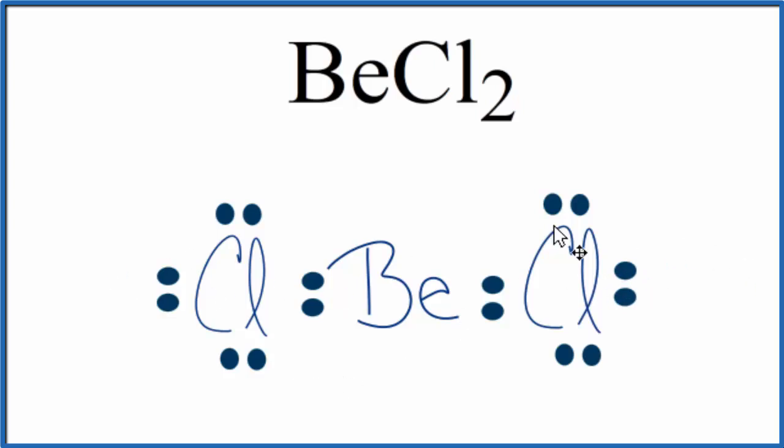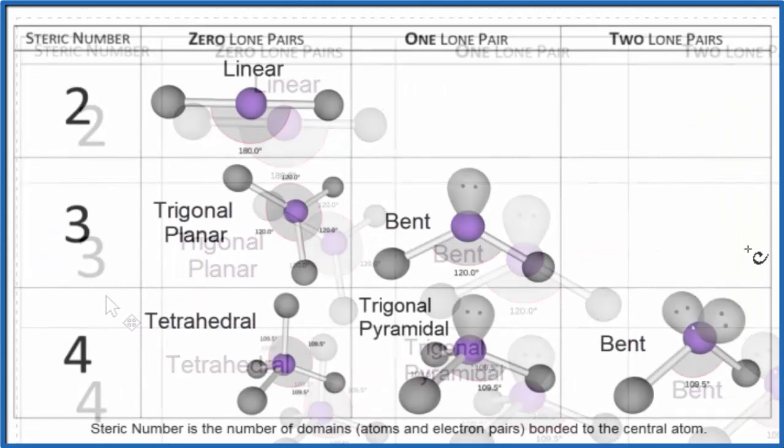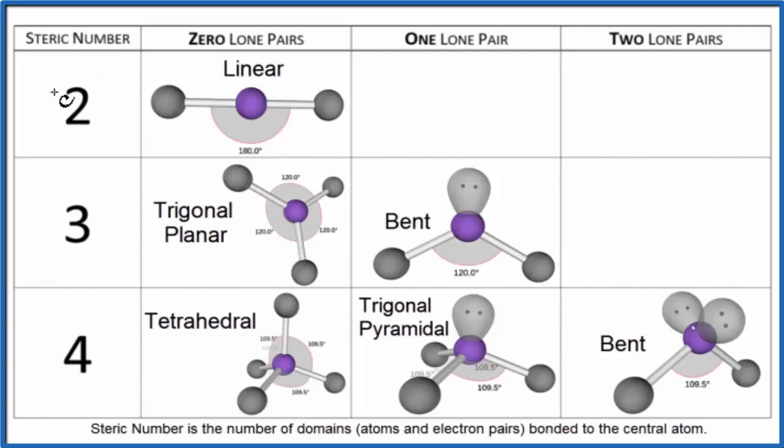We have two things bonded to the beryllium, no lone pairs. So on the table, we have these two things bonded, this steric number, no lone pairs. We have a linear molecular geometry.